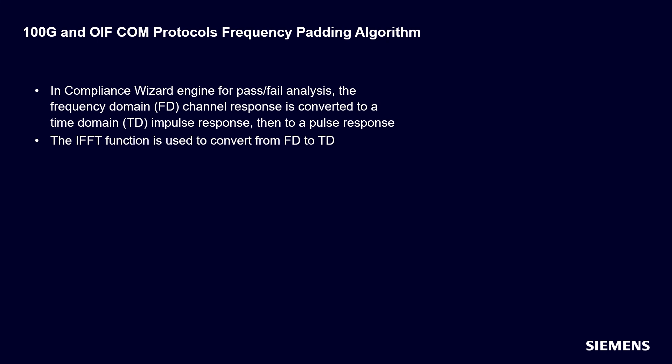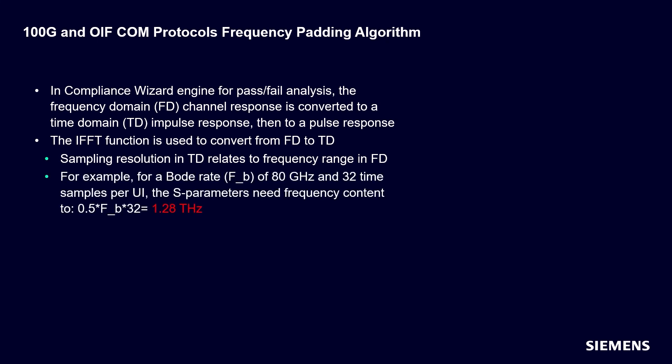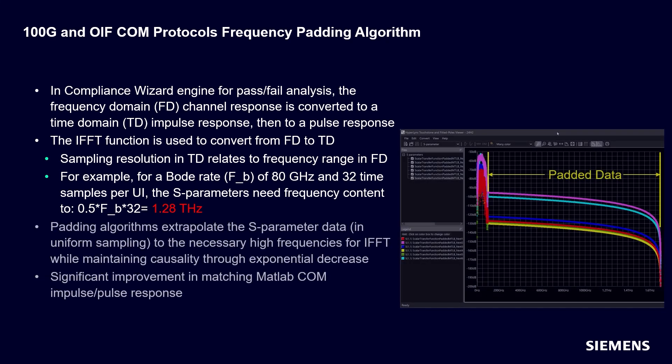The sampling resolution in the time domain relates to the frequency range in the frequency domain. For example, for a baud rate of 80 gigahertz and 32 time samples per UI, the S-parameters need a frequency up to 1.2 terahertz. This is unfeasible, so the improvements made to 100G and OIF-COM algorithms is the use of padding algorithms. Padding algorithms extrapolate the S-parameter data in uniform sampling to the necessary high frequencies for IFFT while maintaining causality through exponential decrease.